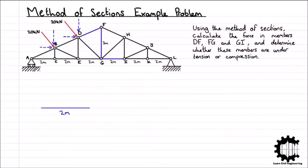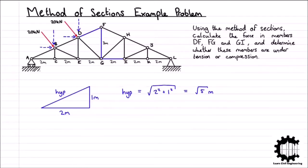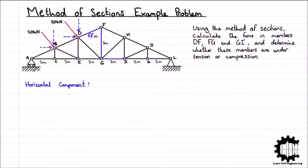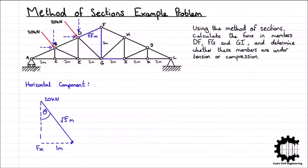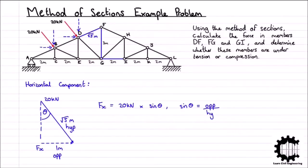With a horizontal length of 2m and a vertical length of 1m, using Pythagoras' theorem, we calculate the hypotenuse as the square root of 2² + 1², which equals the square root of 5m. For the horizontal component Fx, we have the external force of 20kN over a length of root 5m, and Fx over a length of 1m, with angle theta between the external force and the vertical plane. Therefore, Fx is the opposite side and the external force is the hypotenuse. Using trigonometry, Fx = 20kN × sin θ, where sin θ = 1/√5, giving Fx = 8.944kN.